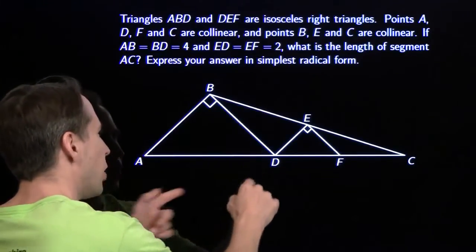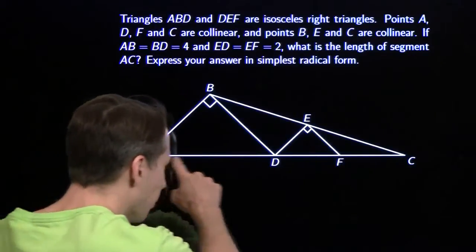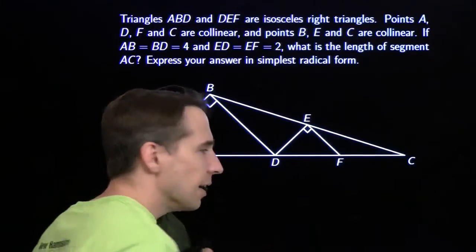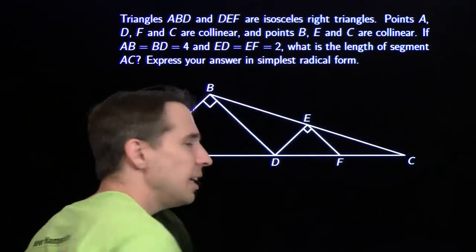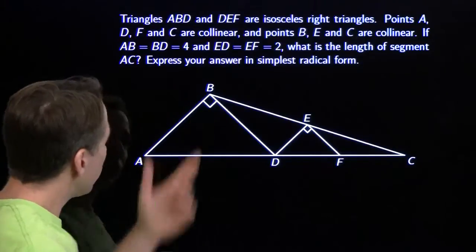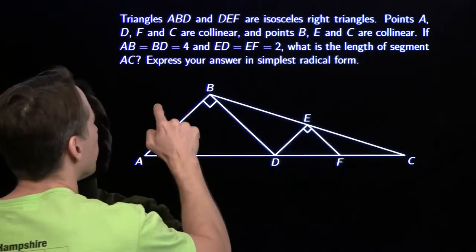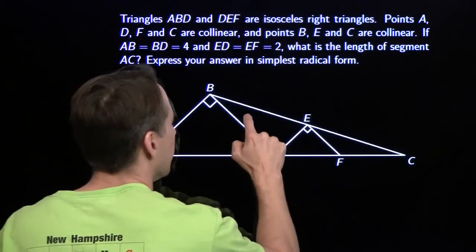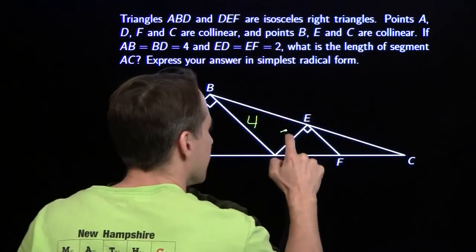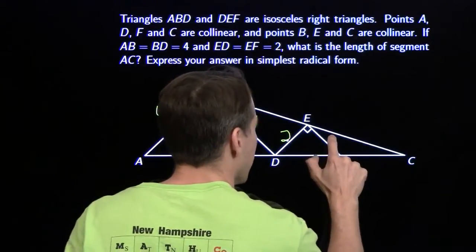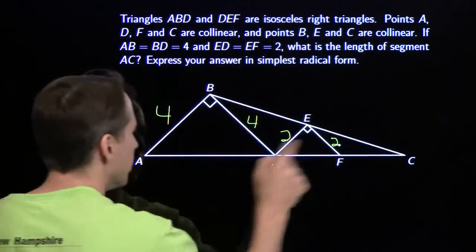We have two isosceles right triangles, ABD and DEF. These four points down here, ADFC, are collinear. BEC is also collinear. They give us a few of the side lengths here. I'm going to go ahead and scribble those right on our diagram: 4, 4, 2, and 2.